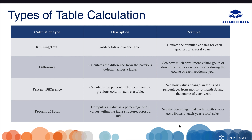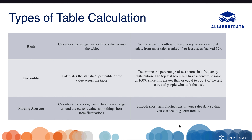Percent of total calculates the percentage for all values present in your table structure. Rank is used to assign an integer number across the values, starting from 1 to n.